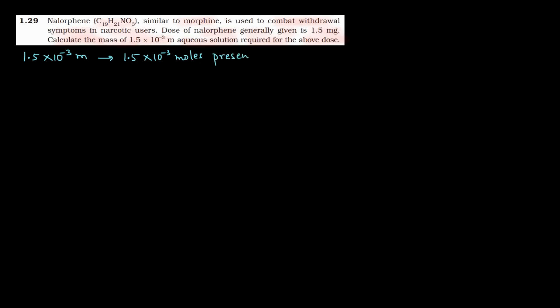This is an aqueous solution, meaning the solvent is water. The molality given is 1.5 × 10⁻³ m. This means 1.5 × 10⁻³ moles are present in 1 kg of water — because molality is moles of solute divided by mass of solvent in kg. So 1.5 × 10⁻³ moles are present in 1 kg, or 1000 grams, of water.